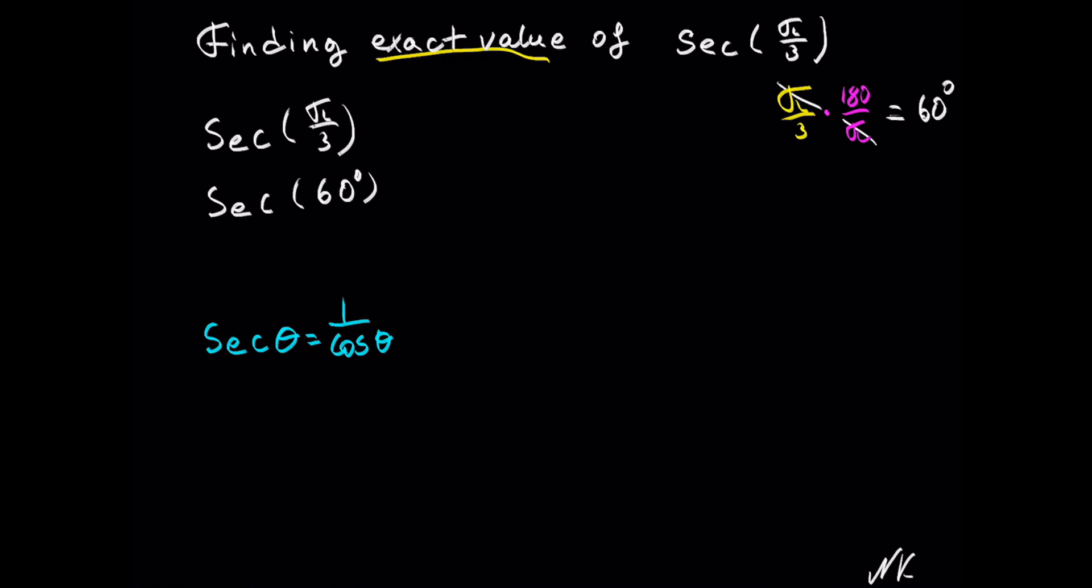So let me derive the reference table. We have 0, 1, 2, 3, 4. Take a square root of this whole thing and divide everything by 2. Cosine reference goes from right to left. So cosine of 0, 30, 45, 60, 90 degrees.